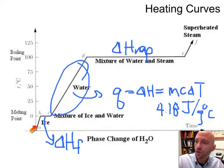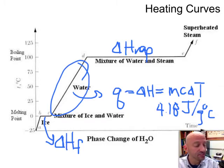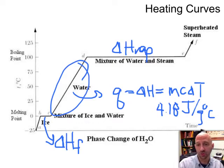Down here we have another sloped part. This too will be a Q equals M, C, delta T calculation. And the only difference there is the C value for solid water for ice is 2.1 joules per gram degree C. So down here we're talking 2.1.